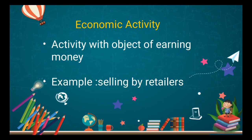For example, a manufacturing unit — let's take a newspaper manufacturer. Daily, lakhs of newspapers are manufactured. There is production of goods, and the manufacturer's motive is to sell all the newspapers to the public and earn money. So there is a motive of earning money — that is an economic activity. Any activity done by humans with the object of earning money is called an economic activity.